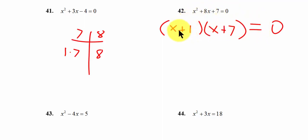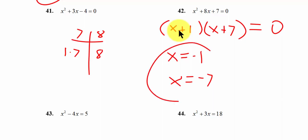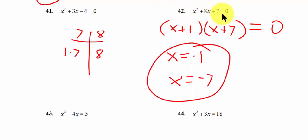The problem says solve, so the final answer is what values of x make this true: x equals negative 1 and x equals negative 7. Notice the difference — in problem 42 there is an equal zero, so our final answer is solving for x. x equals negative 1, x equals negative 7.